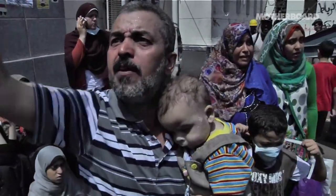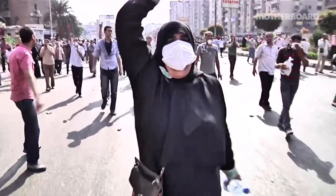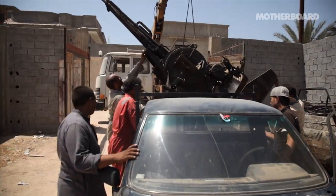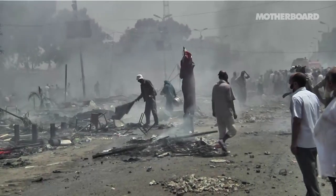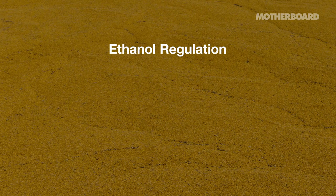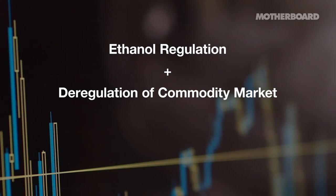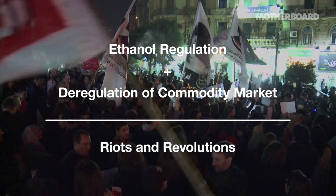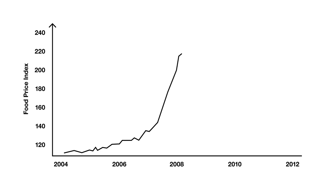In the case of the Arab Spring, it turns out that policy decisions are made without recognizing their indirect effects. The regulation of ethanol and the deregulation of the commodity markets triggered riots and revolutions around the world. Our ethanol policy by itself has led to a doubling of global food prices. Food prices went up dramatically in 2007 and 2008, more than doubling.